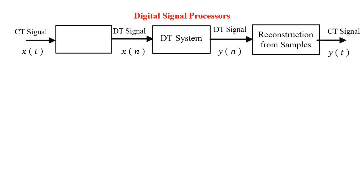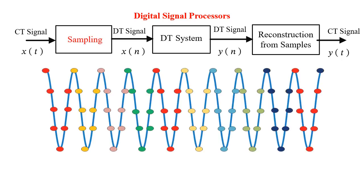The process of converting a continuous time signal into a discrete time signal by taking few samples of the continuous time signal is called sampling. Taking too many samples of a signal results in exact reconstruction of the original signal, but that is a waste of memory and other resources.